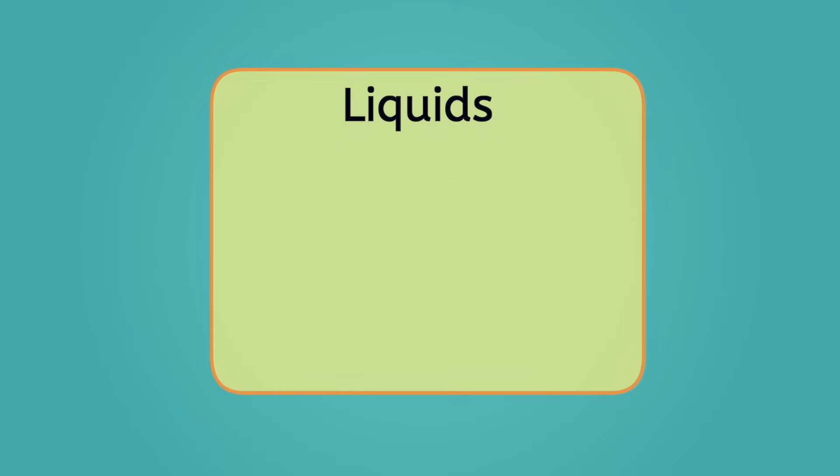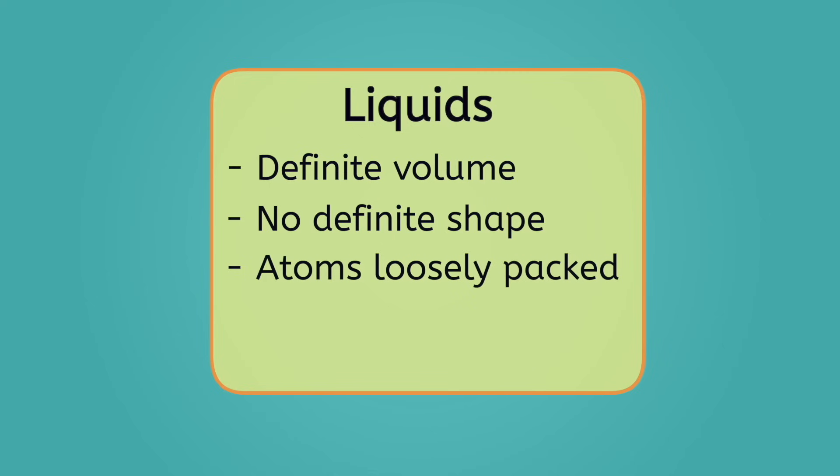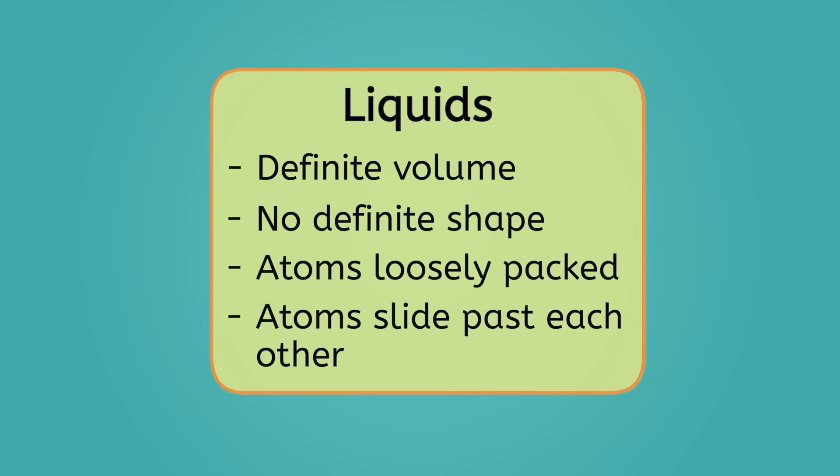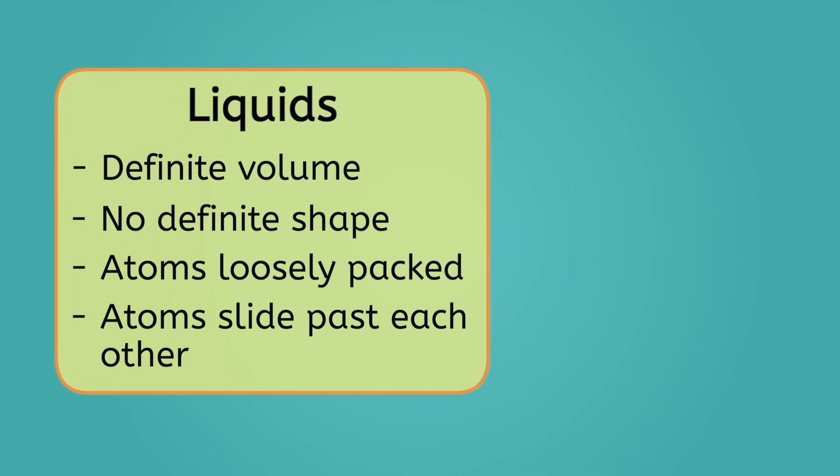To recap, matter in the liquid state has a definite volume, but no definite shape. Its atoms are more loosely packed, allowing them to move faster and slide past each other. Pause the video now and write down some examples of liquids in your guided notes.